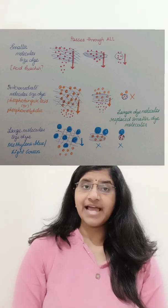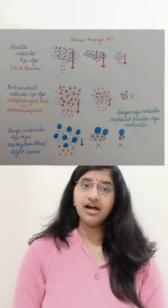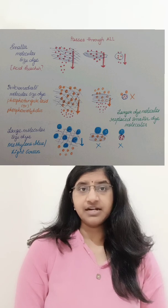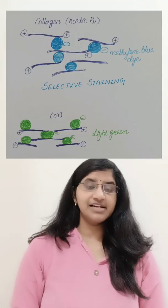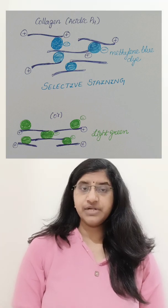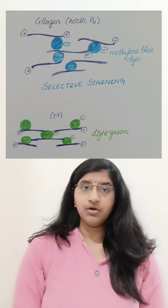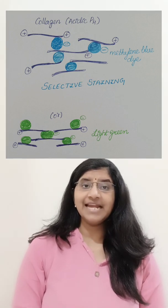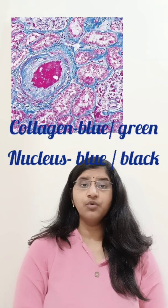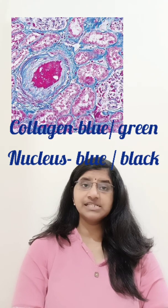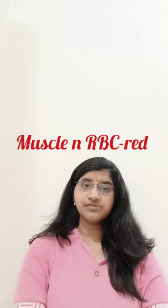As a result, collagen will take up a different colour and muscle will take up a different colour. The final result depends on the larger dye chosen — if you use methylene blue, collagen will be blue; if you use light green, collagen will be green. The nucleus will be blue or black because we use haematoxylin as the counterstain. Muscle and RBCs will be red in colour.